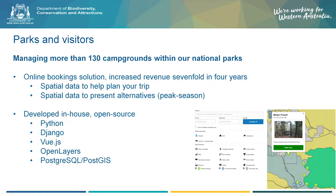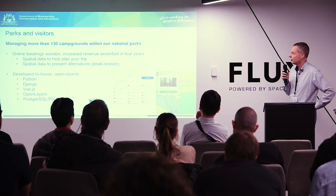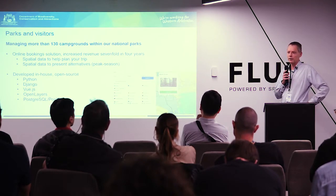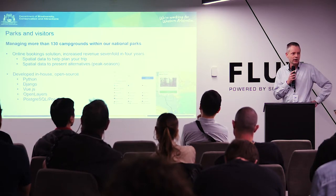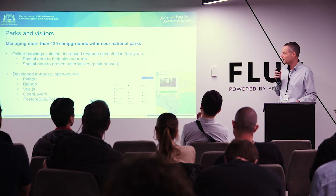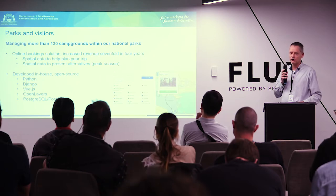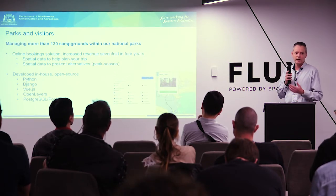What I actually want to talk about quickly is parks and visitors — we are using spatial data. We provided an online tool to book our campgrounds. We have about 130 campgrounds in national parks. If you want a really special location to spend your night, a national park is often one of those. We provided an online tool to book and we added spatial data, basically allowing people to plan their trip.